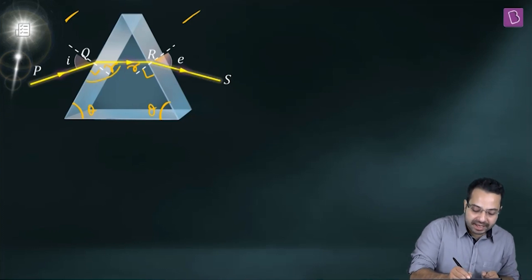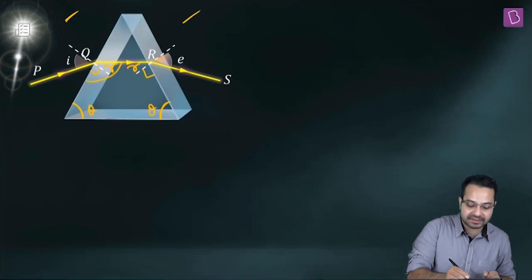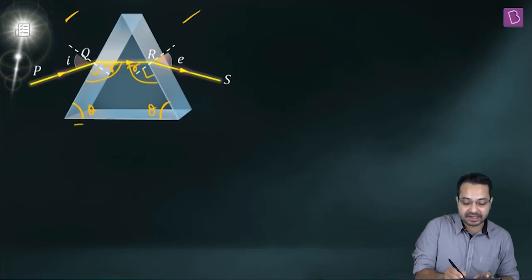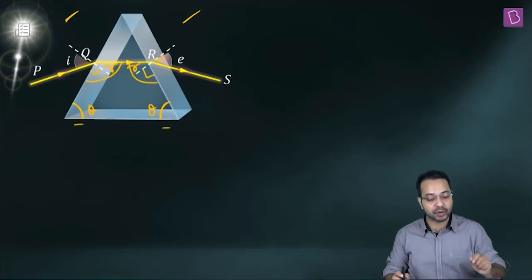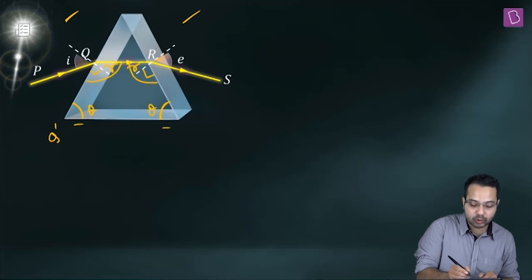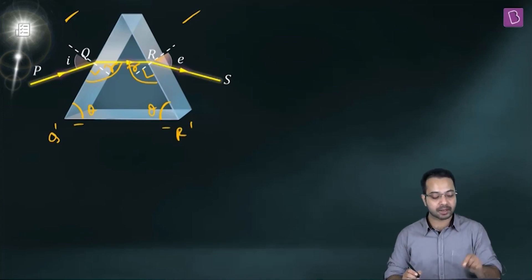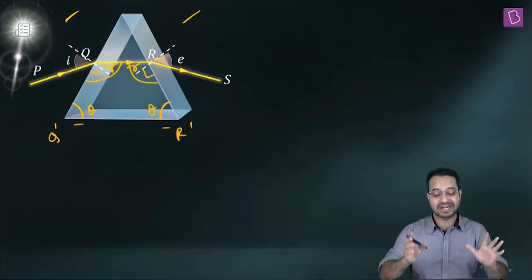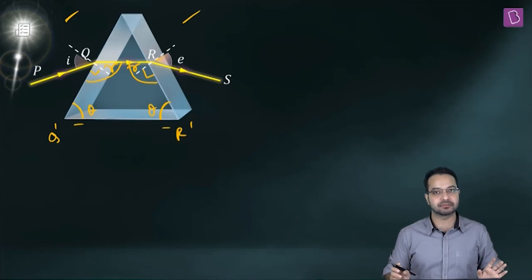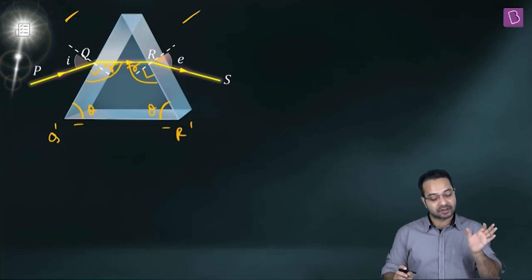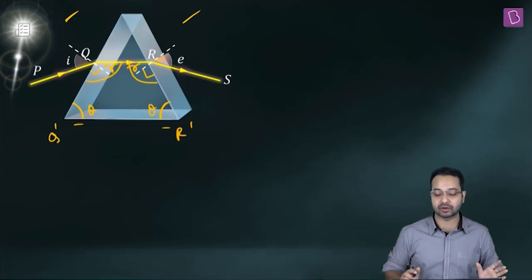This angle is 90 plus R and this angle is also 90 plus R, so they are equal and the base angles are also equal. Which means if I call this Q′R′, then the quadrilateral Q R R′ Q′ becomes an isosceles trapezium. If that is the case, then QR is going to be parallel to Q′R′. Now the base is given horizontal, so QR is also going to be horizontal.